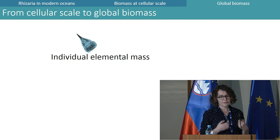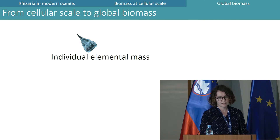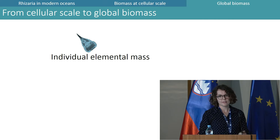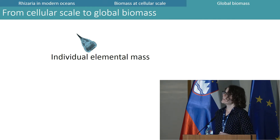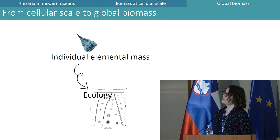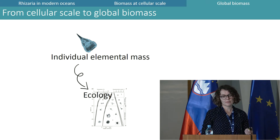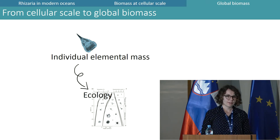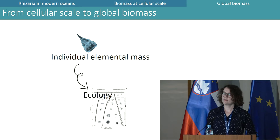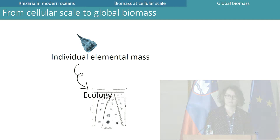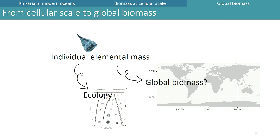We saw that carbon and nitrogen contents can be related to cell size, giving us clues about Rhizaria ecology. Now I will show how we can use these equations to estimate biomass at a global scale.